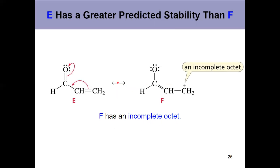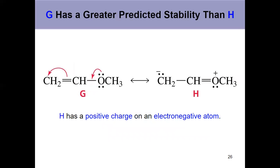Looking at compound E and compound F, they're both resonance contributors, but E is more stable than F. First, F has separated charges — that's the easiest thing to look out for. But in addition, even if we didn't have that, something with an incomplete octet — think all the way back to the octet rule from general chemistry — versus everything having a complete octet, is a less stable resonance contributor. So incomplete octet would be the next thing on the list.